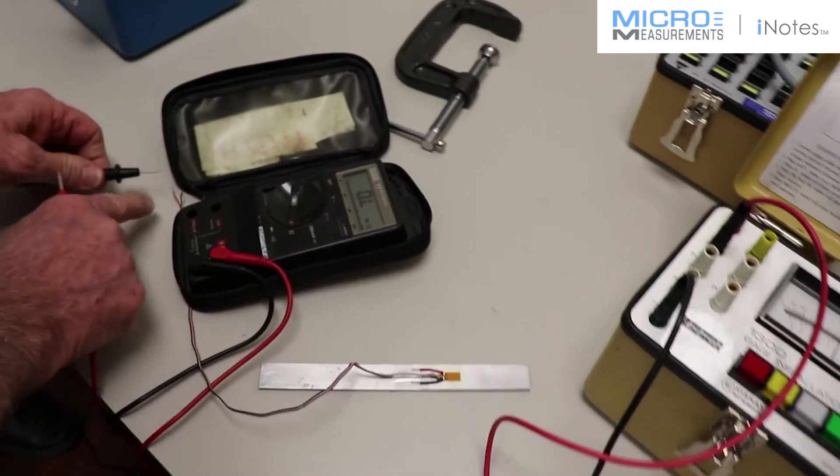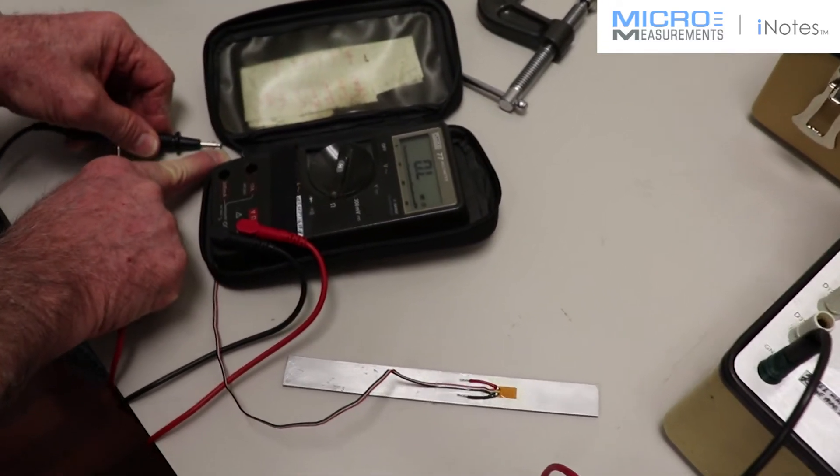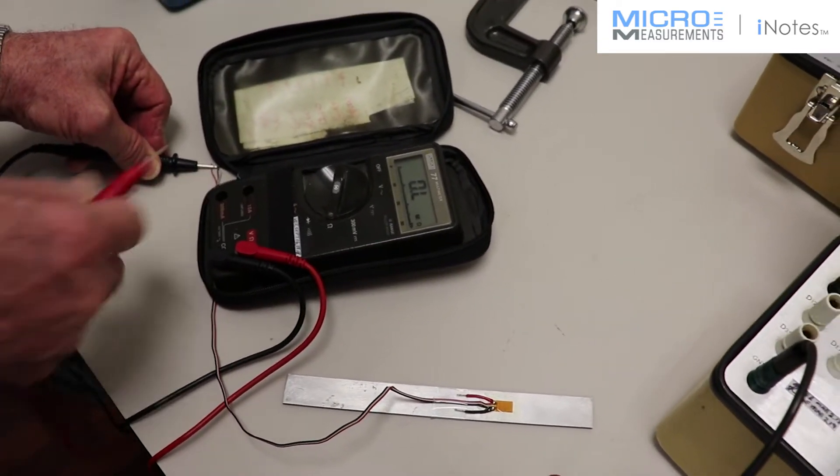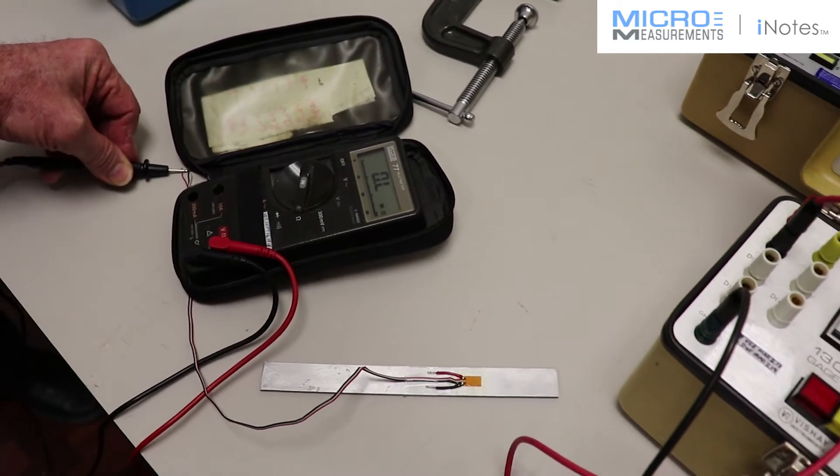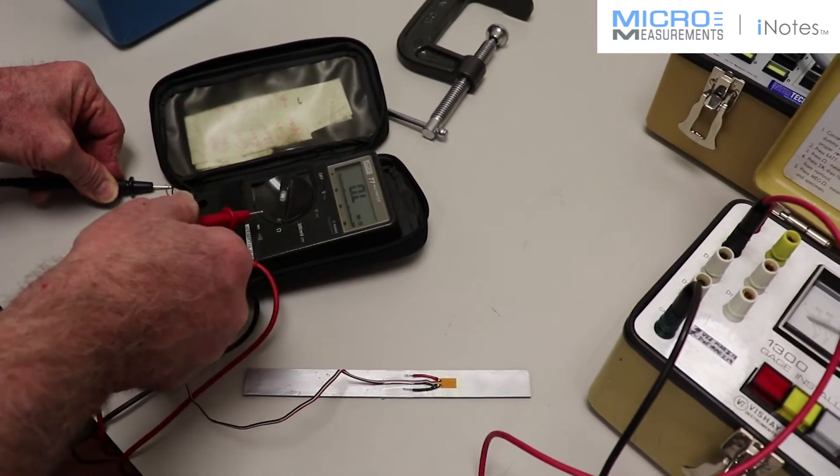Let me put the probe, one probe from the digital voltmeter, which you can buy in a hardware store. We've set it to ohm reading.